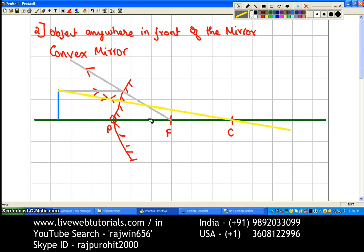So this is going to be your position of the image. Okay. This is the object, I will mark this as AB. This is your image, I am going to mark this as A dash B dash.